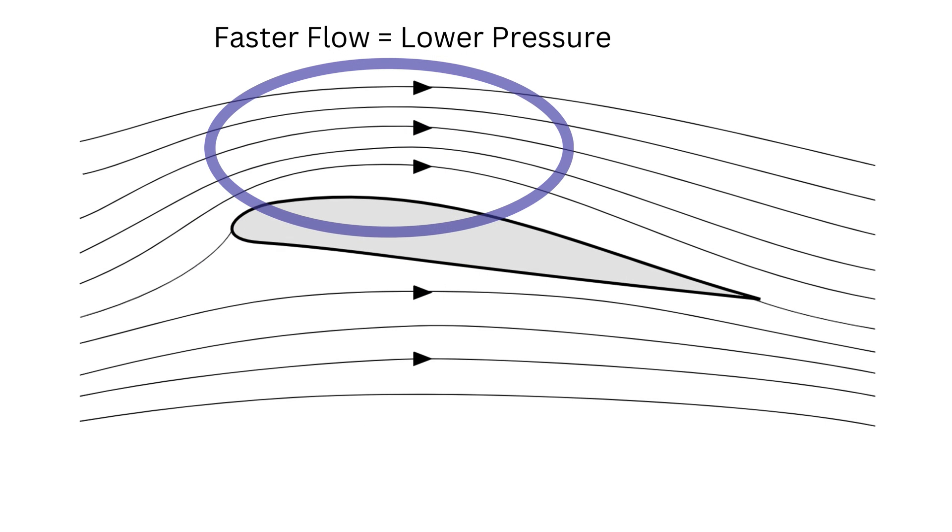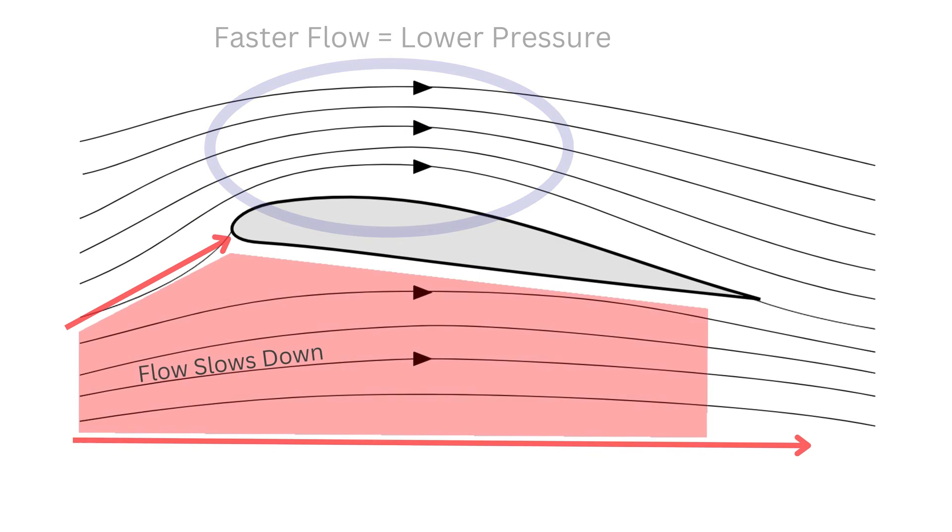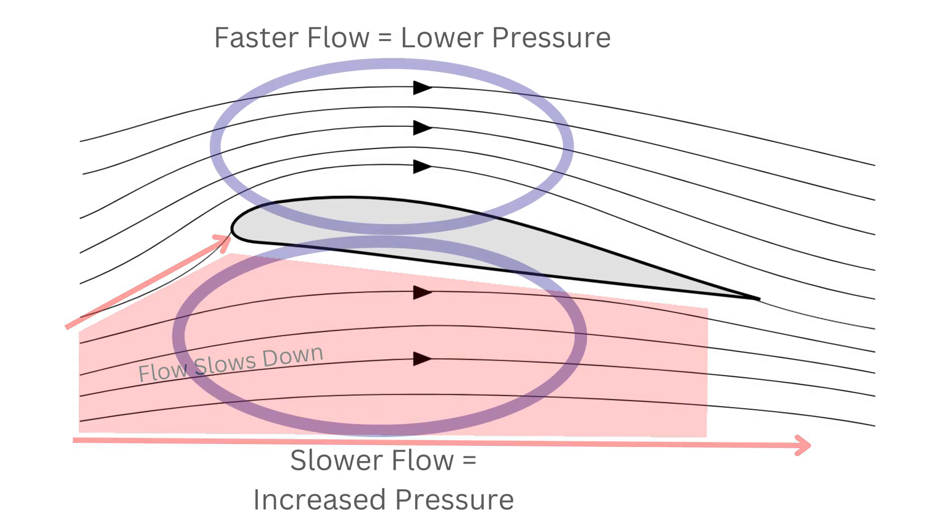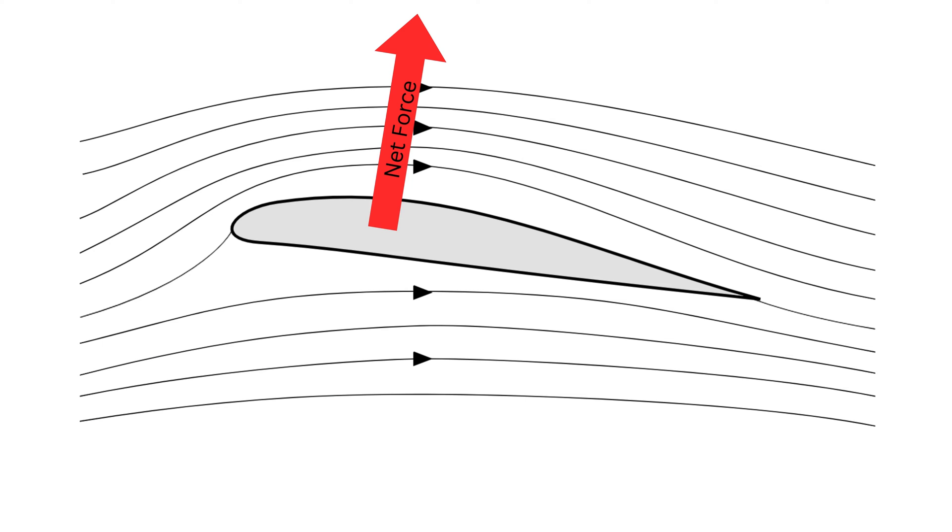This means that the pressure above the airfoil is reduced as it speeds up. Notice the inverse happens below the airfoil. The flow is forced to pass over a larger area, making it slow down, increasing its pressure. Since there is more pressure below the airfoil than above it, there will be a net force upwards, which is the force that sustains flight.